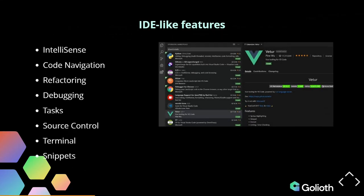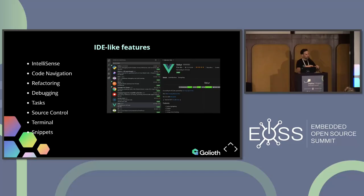Those IDE-like features are pretty interesting — built into VS Code out of the box are things like intelligent coding, or as Microsoft calls it, IntelliSense: syntax highlighting, code completion, code navigation, and refactoring — things you used to have to pay for in other IDEs or premium tools. Also native debugging, native task running, source control management, integrated terminal, and even reusable code snippets. The power there is that extensions can build upon these common capabilities, turning a Python IDE into an embedded C IDE.